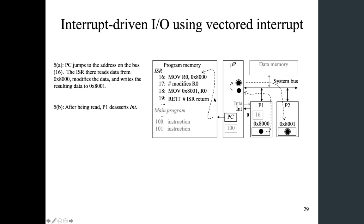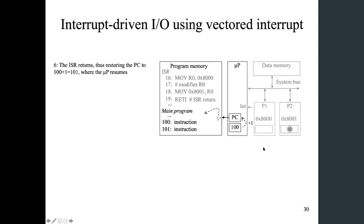The next steps are the same as in the fixed interrupt case: the ISR will be executed, data processing occurs, the updated data will be put into a different peripheral, and finally the microprocessor will return to the main program.